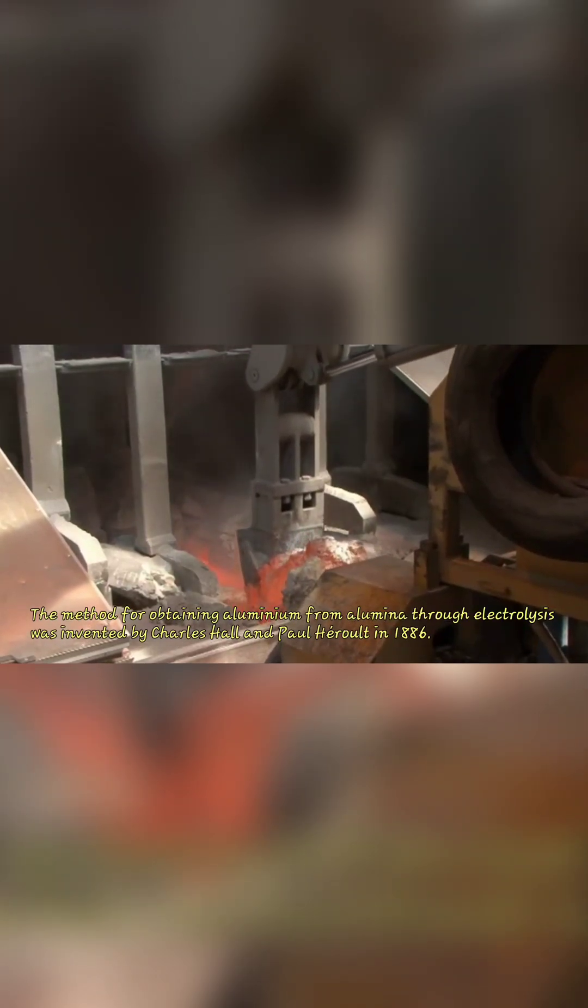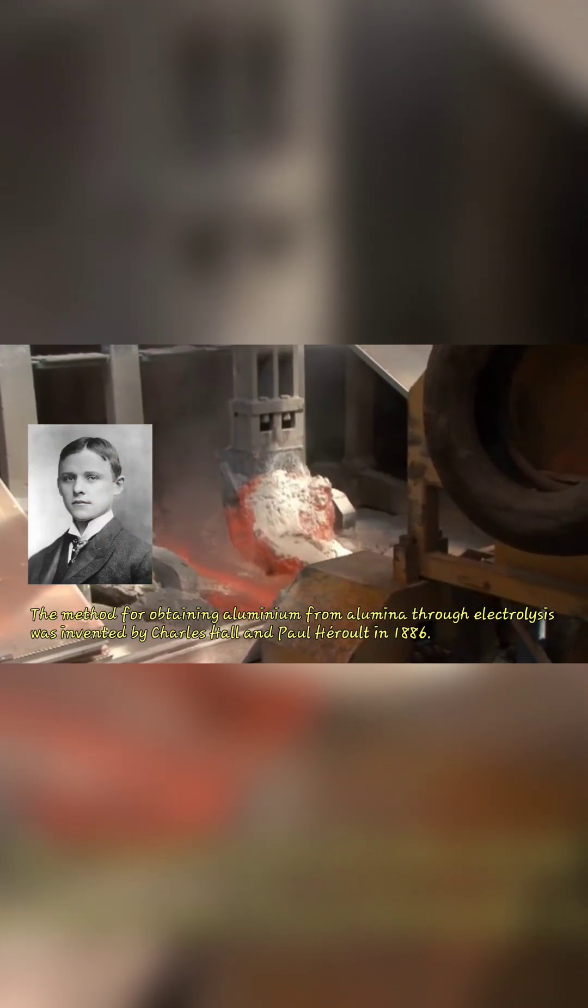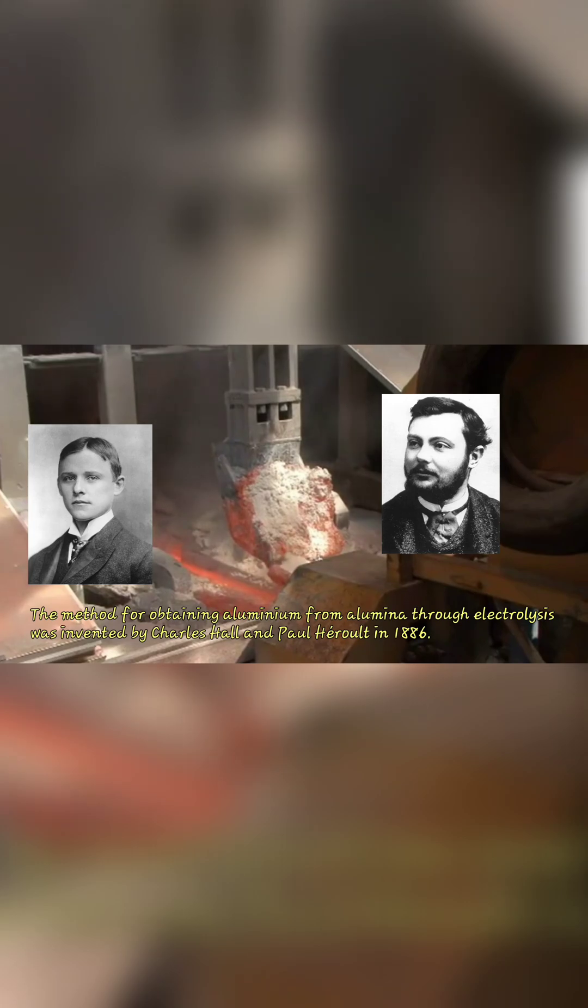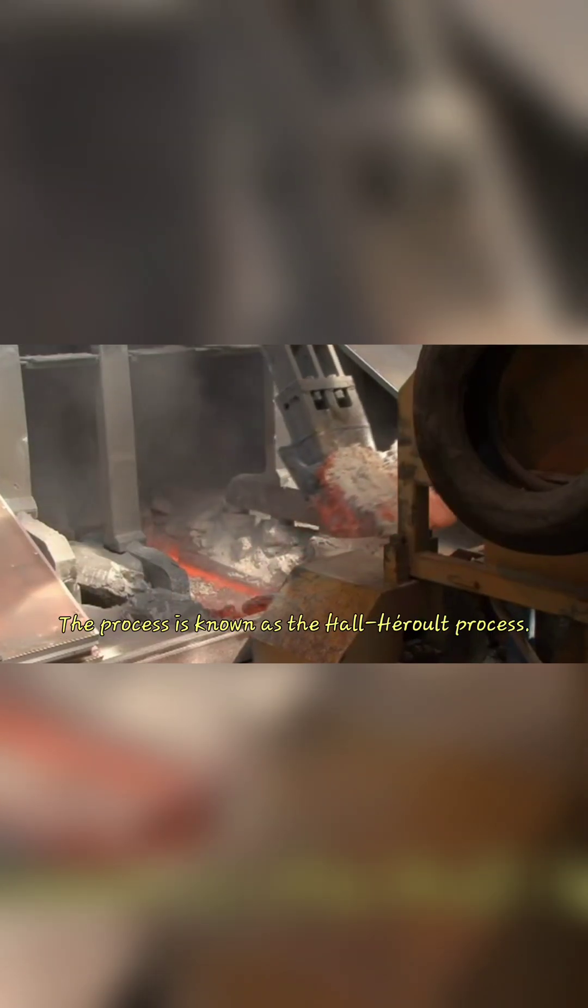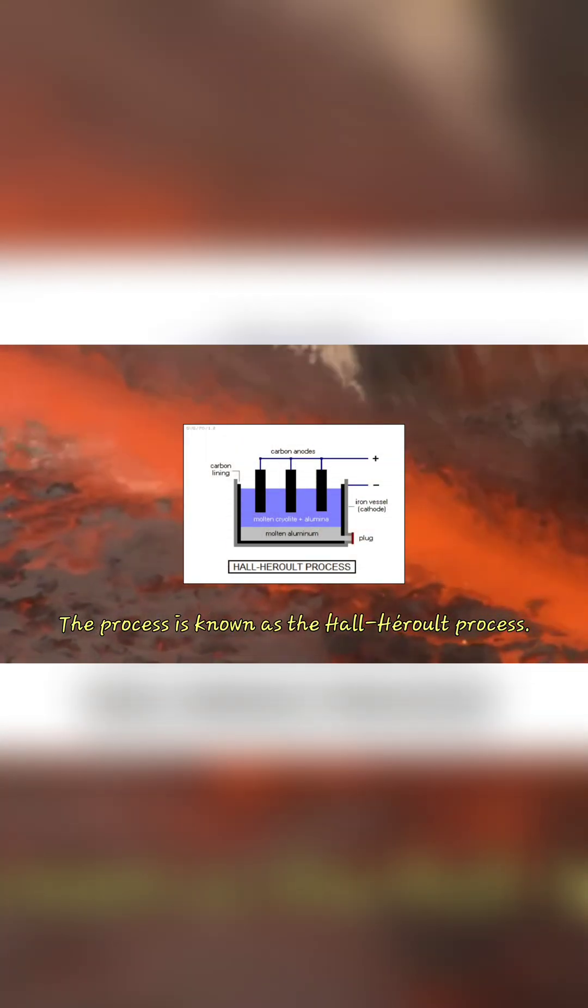The method for obtaining aluminium from alumina through electrolysis was invented by Charles Hall and Paul Heroult in 1886. This process is known as the Hall-Heroult process.